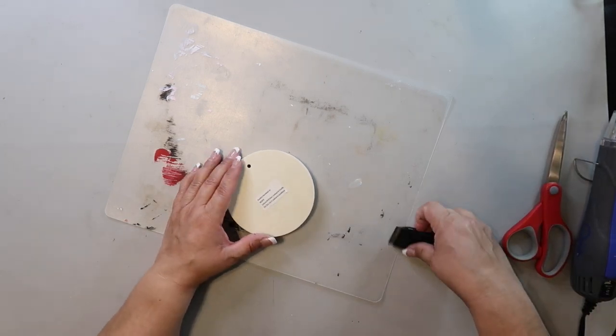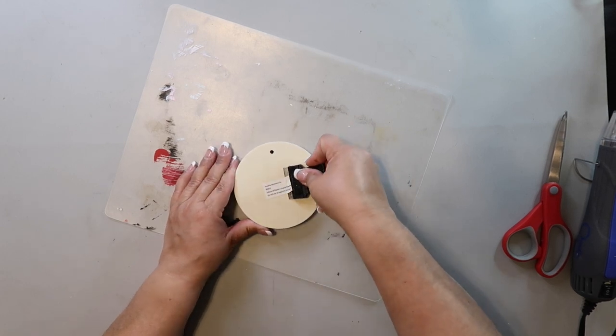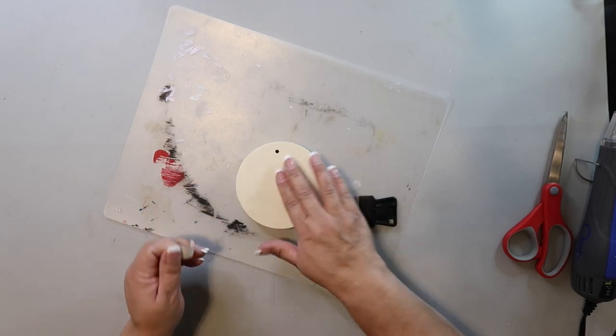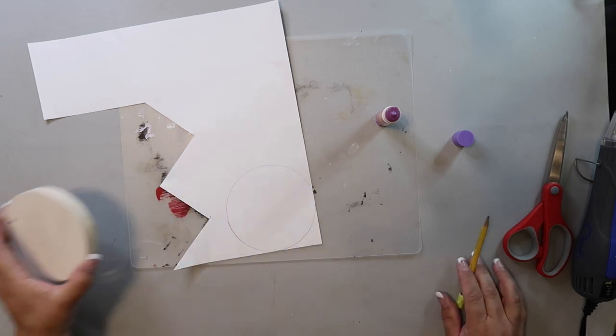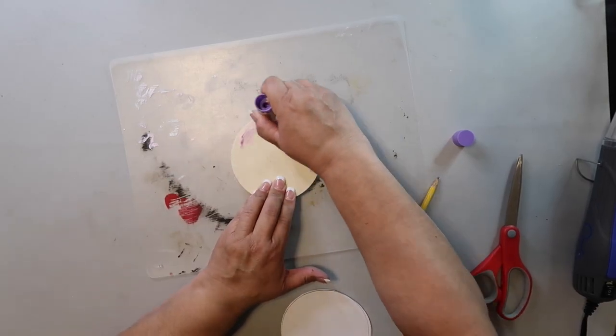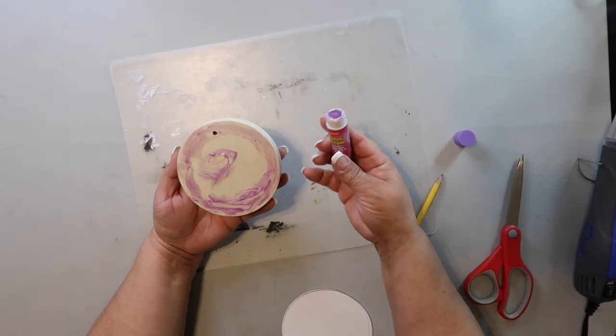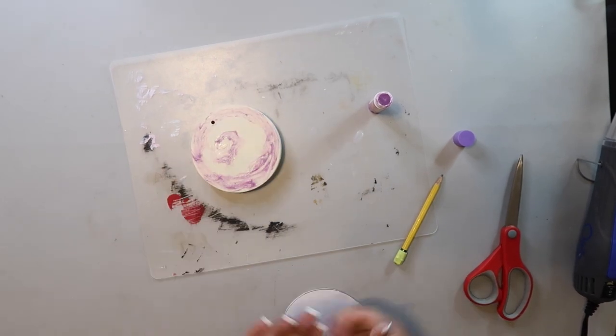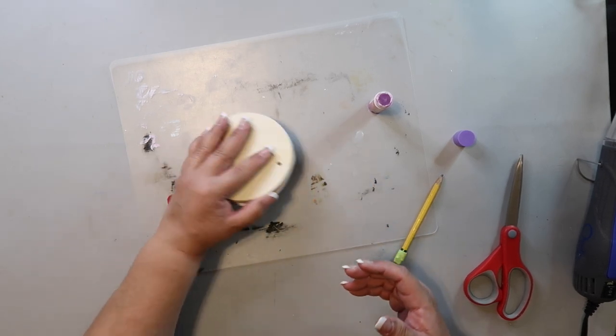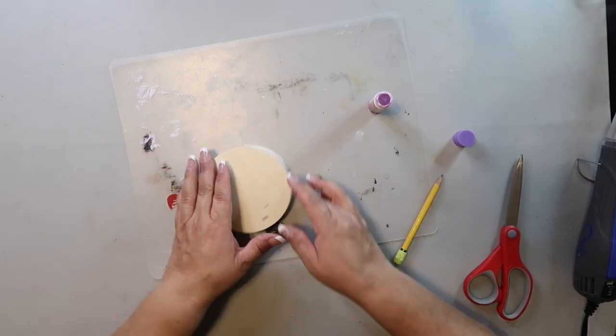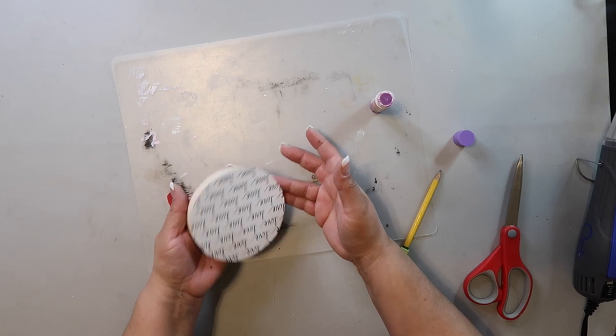Now take some craft paper and I trace out the wood round on it. I cut it out and then apply a good amount of glue onto the wood round. I often use Mod Podge but today I'm just using a glue stick. The craft paper has the word love written all over it from Hobby Lobby. I put the paper on top, flip it over, and press it down to make sure the paper is adhering.